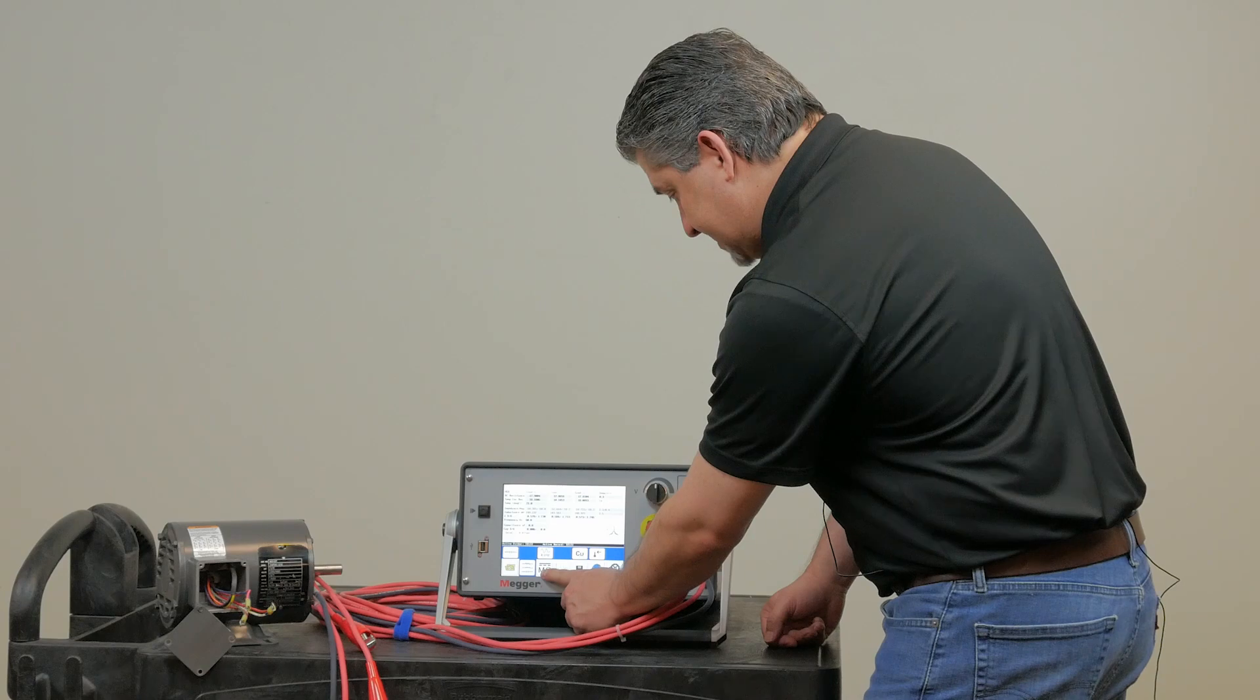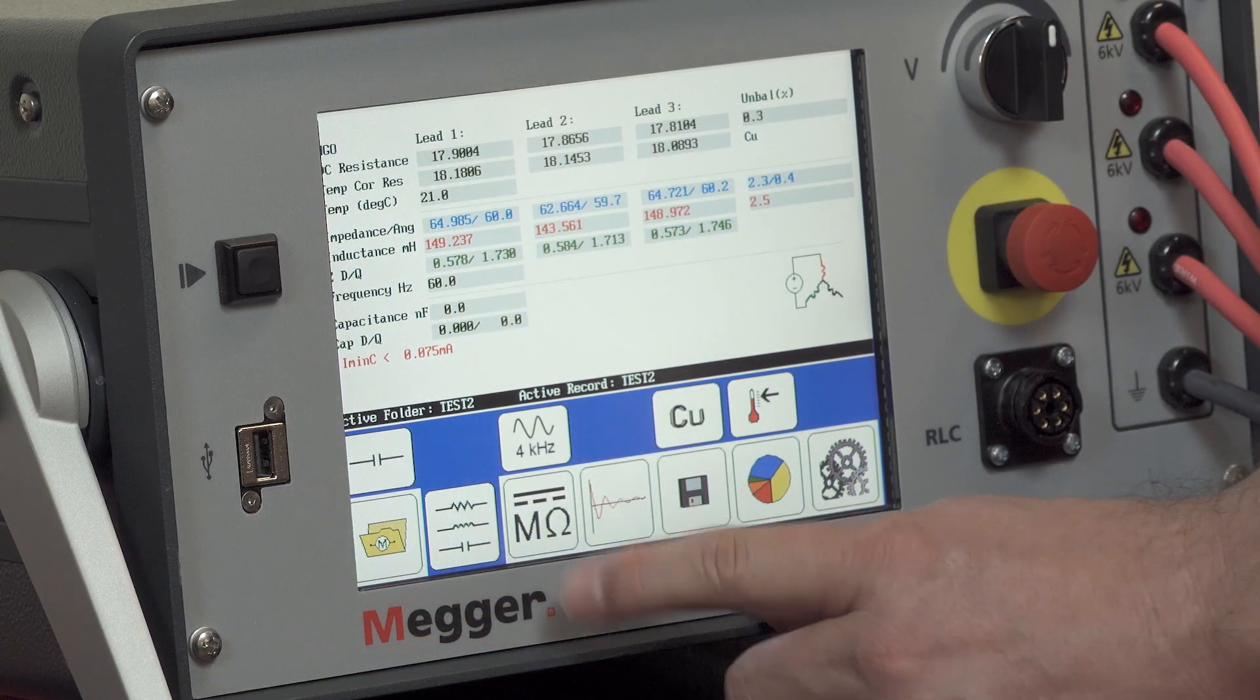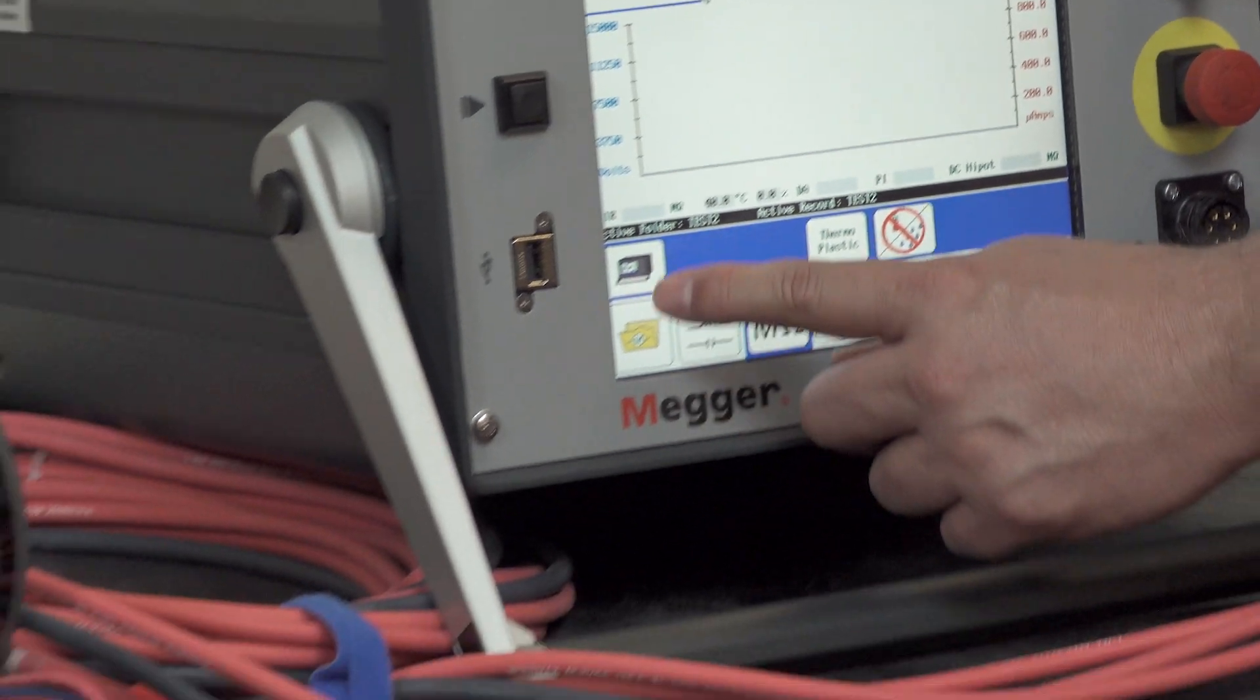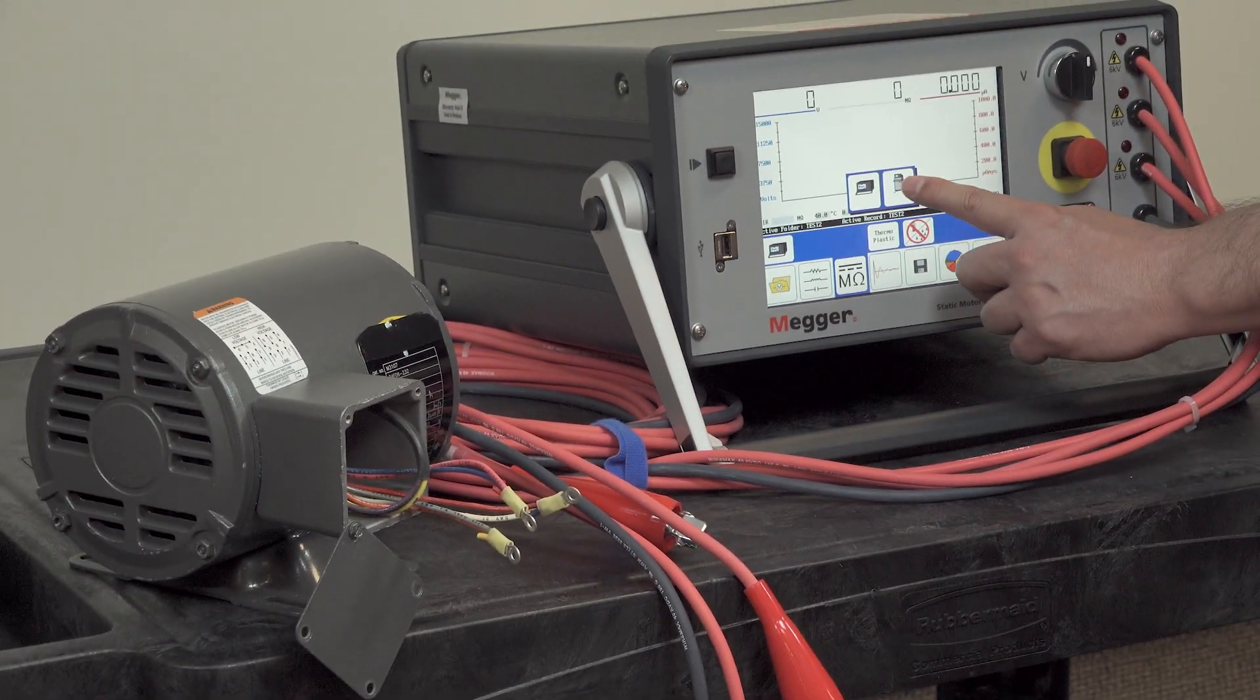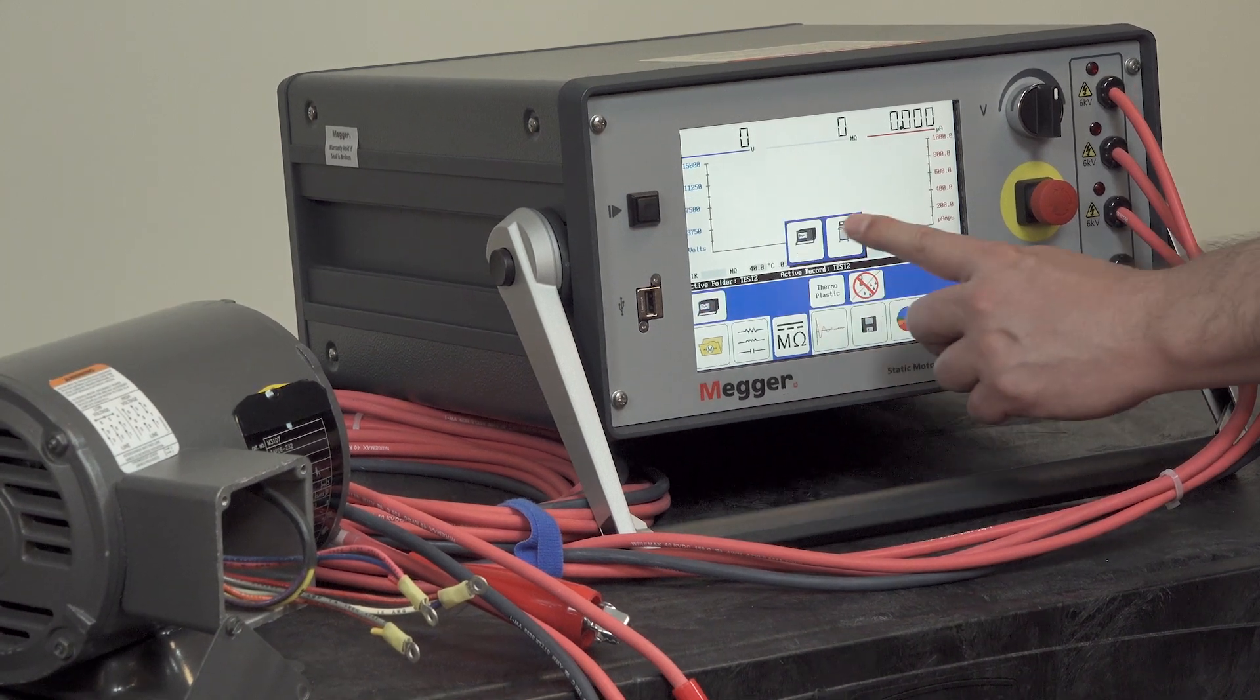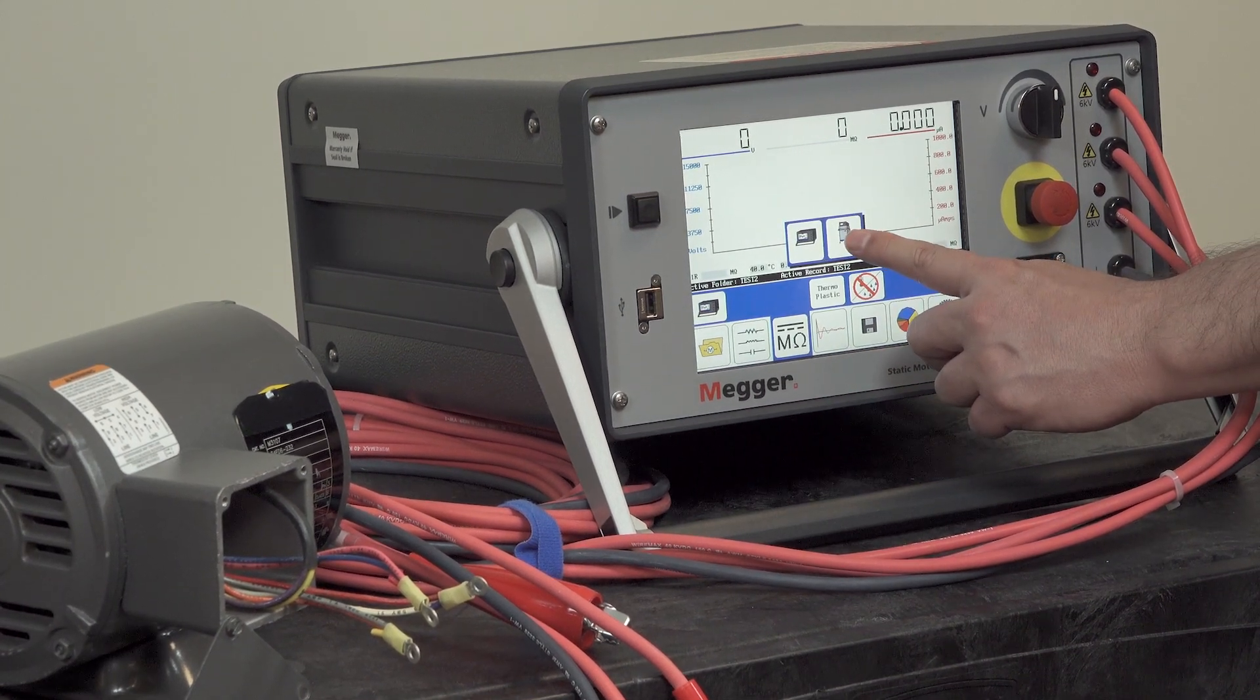Now we'll move on to DC testing by selecting the mega ohm icon here, selecting the proper tester configuration. In this case we're using the Baker DX only; the other option of course is the DX with power pack for high voltage testing.